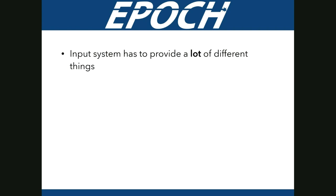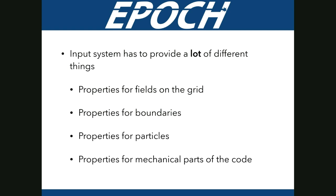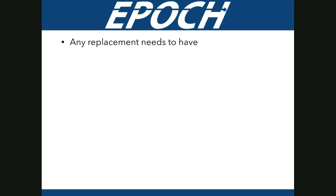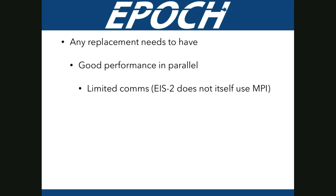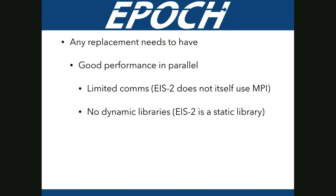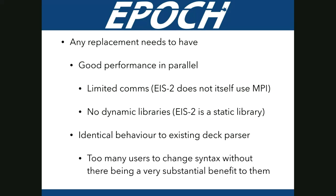The input system has to provide properties for fields on the grid, properties for boundaries, properties for particles, and specify mechanical parts of the code. Any replacement needs good performance in parallel, meaning very limited communications. EIS-2 itself isn't an MPI library — it provides tools that make it fit well into an MPI environment. Dynamic libraries on large parallel systems tend not to work very well, so EIS-2 is a static library.